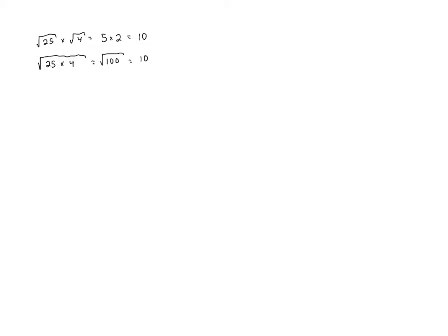Notice that we got the same answer when we took the square root first and then multiplied, or when we multiplied first and then took the square root. Now this doesn't prove that that always happens, but you could do this with other numbers and you would get the same result, and we can write this result as a rule. It says that if we have the square root of a product, a times b, this is the same as the product of the individual square roots. This is the product rule for square roots.